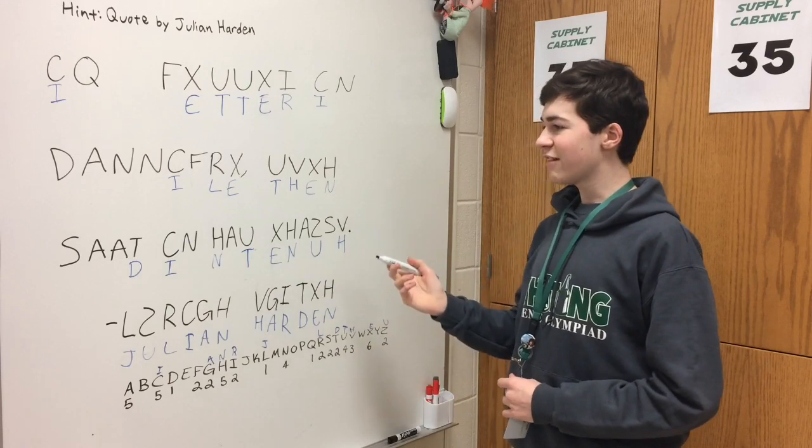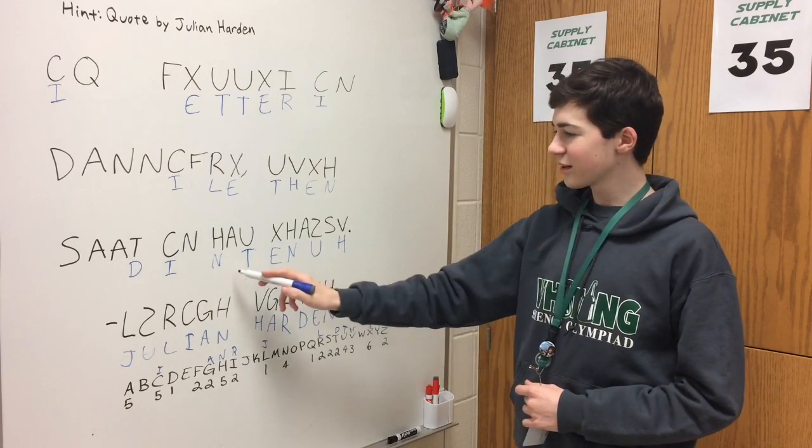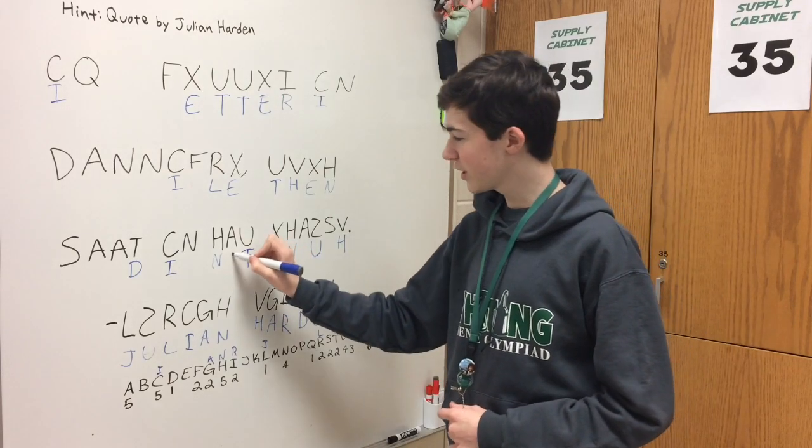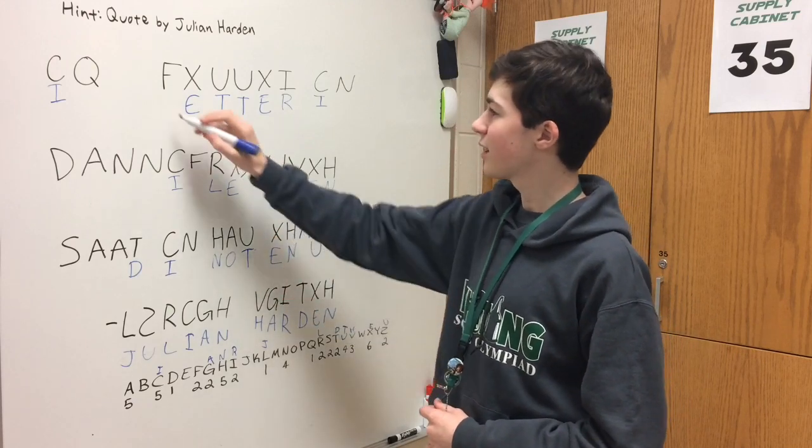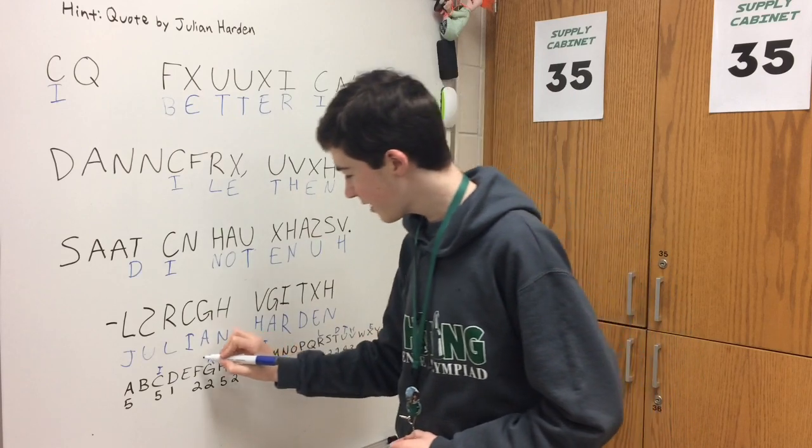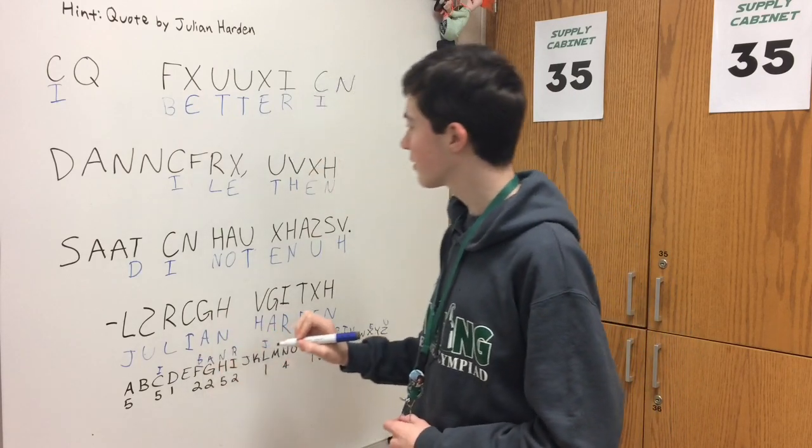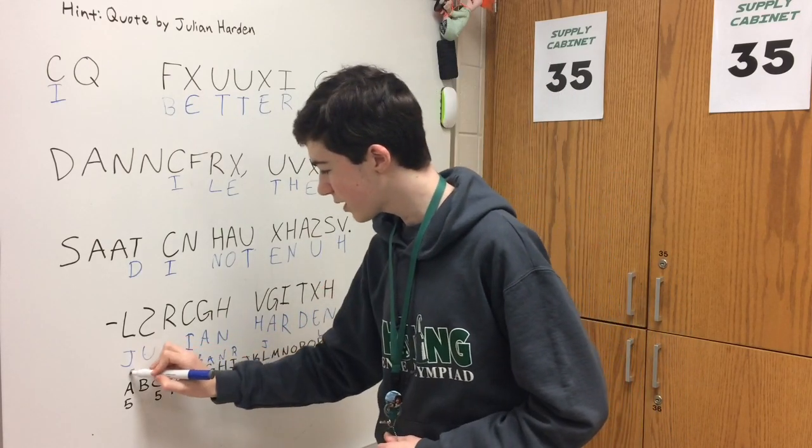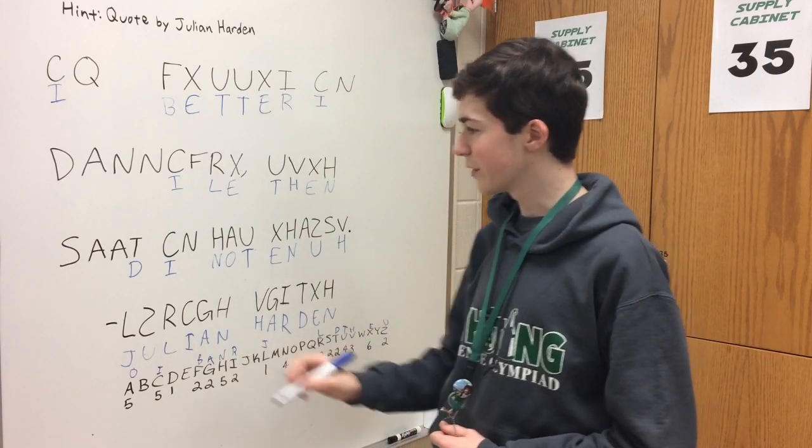From here, we have more choices. We can either say that this word here is not, and this word is better. So that would have F as B and A as O. So we'd fill those in.